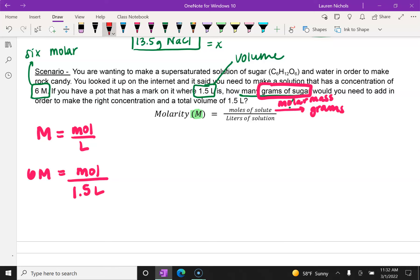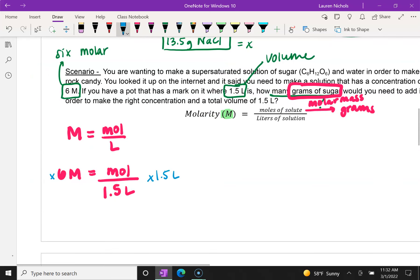So in order to get moles by itself, what we'll do is we'll multiply by 1.5 liters on both sides. This cancels out, and this tells us that our number of moles is going to be equal to 1.5 times 6, which is 9 moles. So we're going to have 9 moles of our solute, which is sugar.